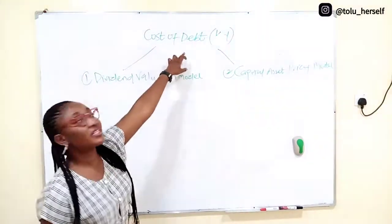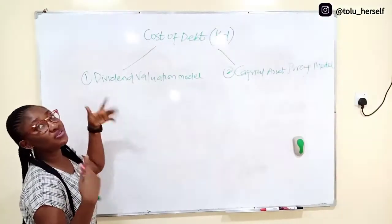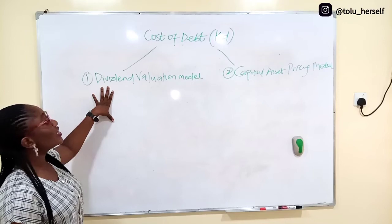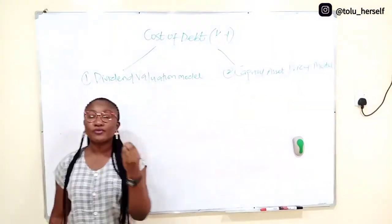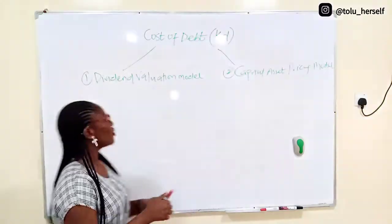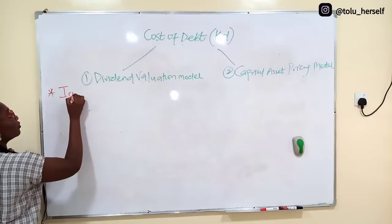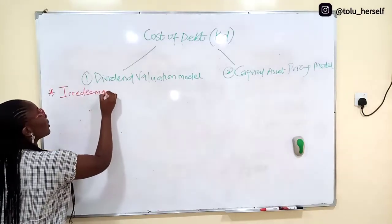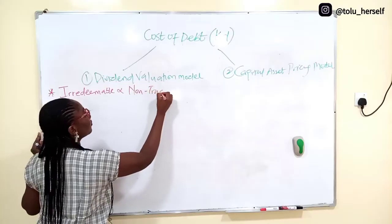So what does the debt holder receive? The debt holder receives interest, while an ordinary shareholder receives dividend. So in this dividend valuation model to estimate the cost of debt, you have to look at the type of debt it is. There are three possible scenarios: the debt can be irredeemable and non-traded, irredeemable and traded, or redeemable and traded.